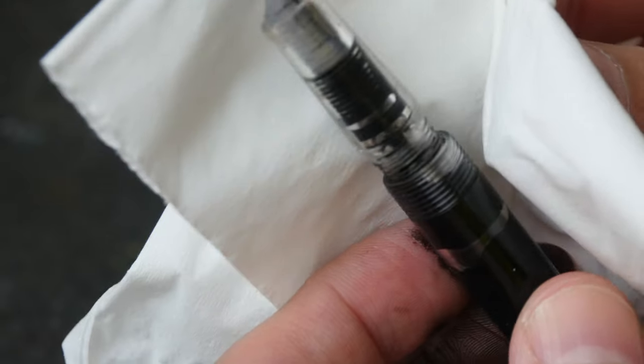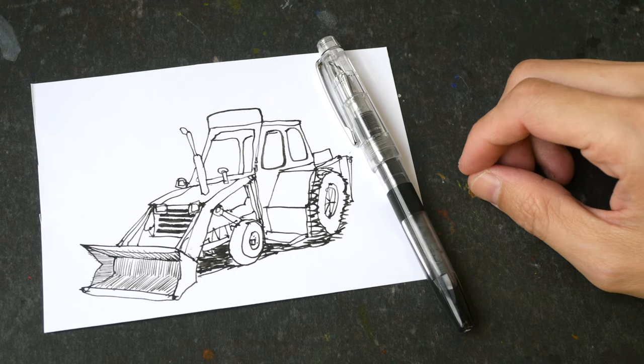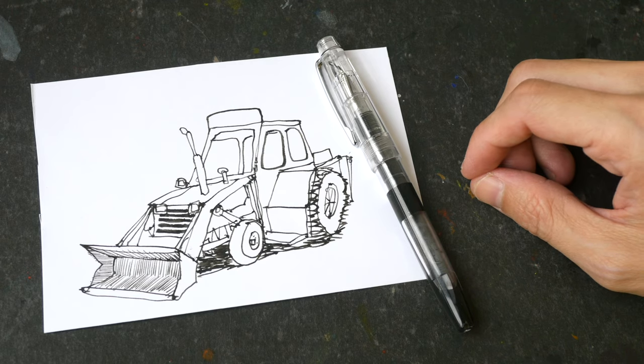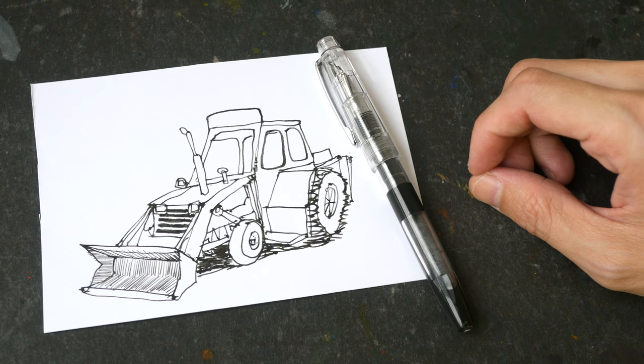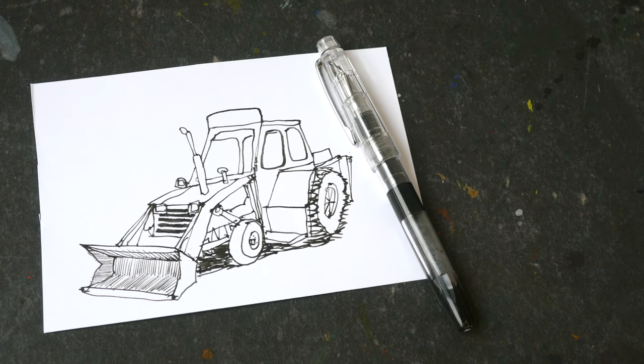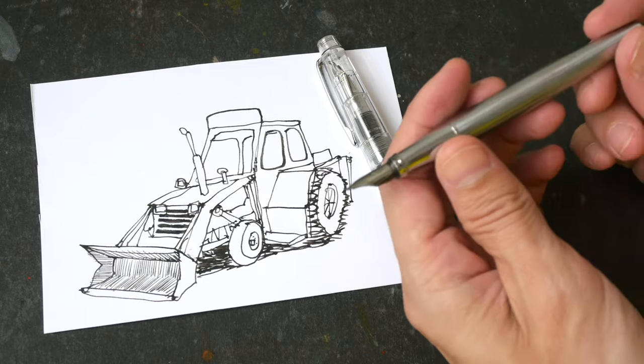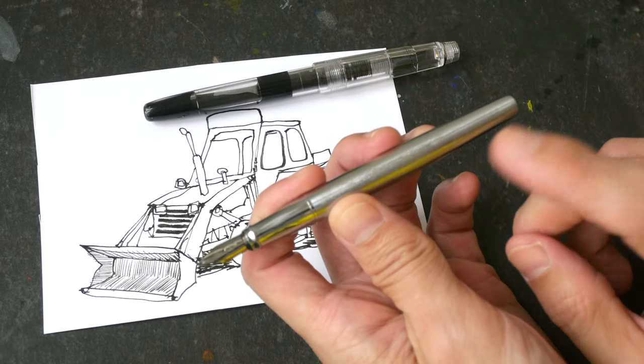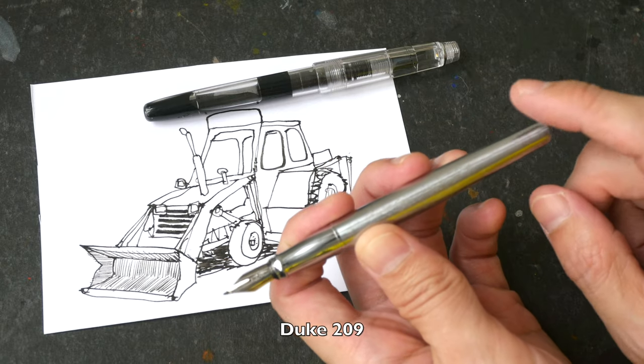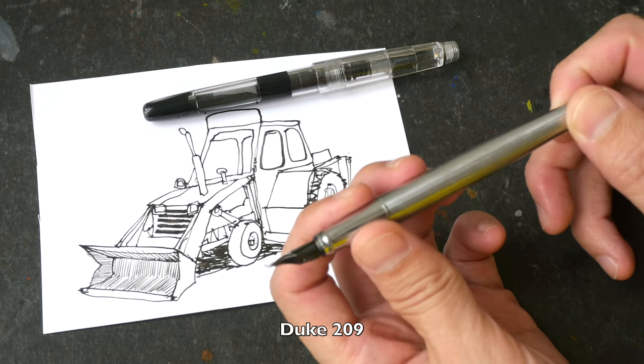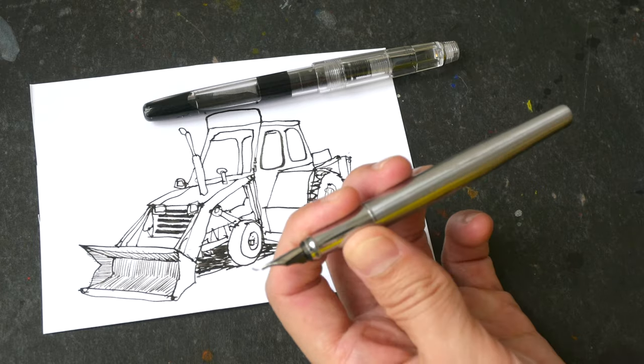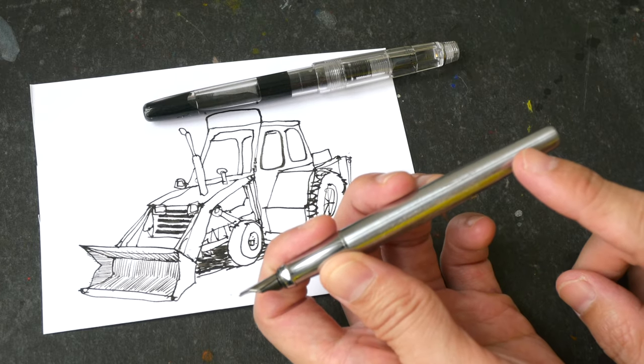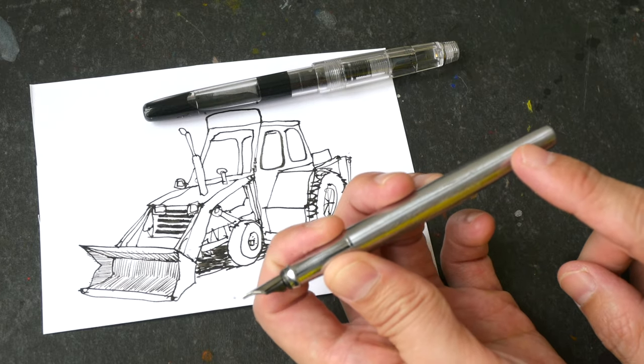Unfortunately, as mentioned earlier, Streets Art does not ship internationally. Anyway, if you want to get a fude nib fountain pen to draw, I can recommend you an alternative. This is the Duke 209 fountain pen with a fude nib, and this is priced around 10 to 15 US dollars with shipping included. You can find this pen on eBay.